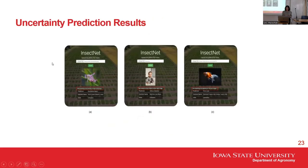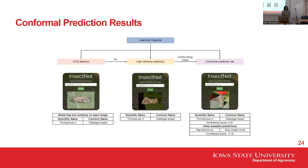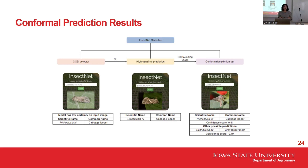The app will flag uncertainty for images of flowers, people, or fish — anything not in its training distribution. For cases with two very similar insects — like northern corn rootworm being confused with cucumber beetle — we added another filter called conformal prediction, which increases reliability by providing prediction sets. For instance, it may say it is 81% confident this is a cabbage looper but 19% confused with the gray looper moth.